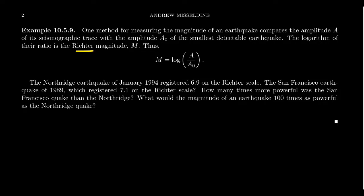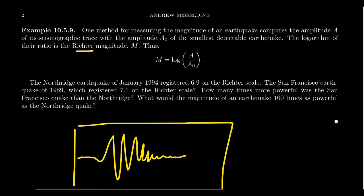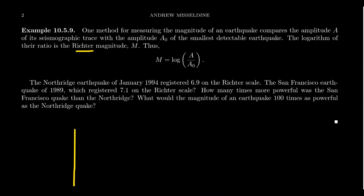One method for measuring the magnitude of an earthquake compares the amplitude A of its seismographic trace with the amplitude A₀ of the smallest detectable earthquake. You've often seen seismographs — a piece of paper with a needle that goes up and down based on vibrations of the earth. We talk about the amplitude: how far from the midline does the needle get? The Richter scale compares the amplitude of an earthquake with the smallest detectable earthquake by a seismograph.